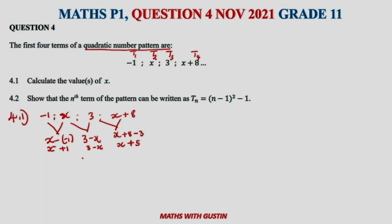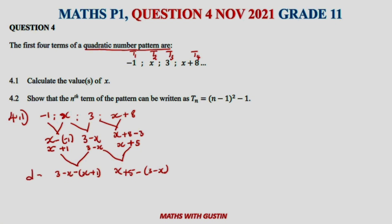Now the second differences are: (3 minus x) minus (x plus 1), which gives us 3 minus x minus x minus 1, and then (x plus 5) minus (3 minus x). Both of these equal d, our common difference.